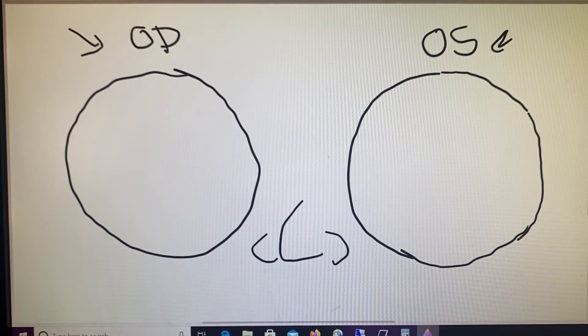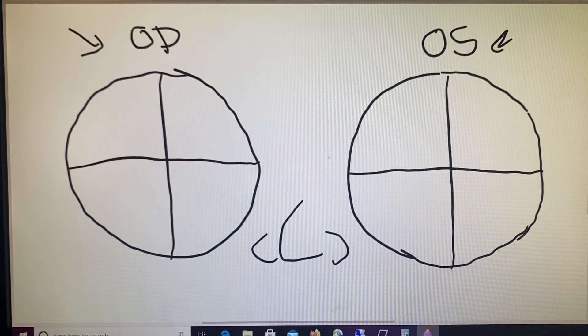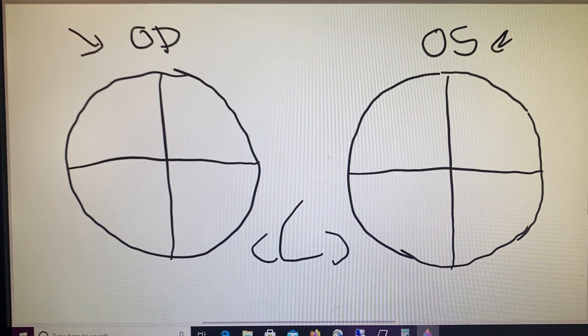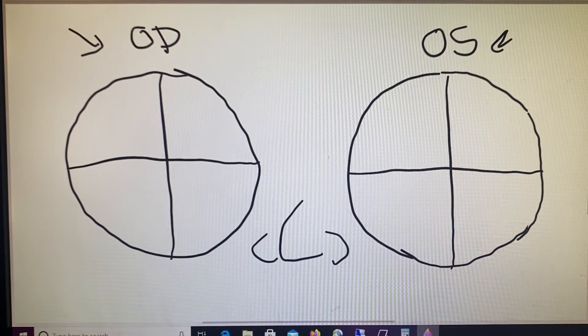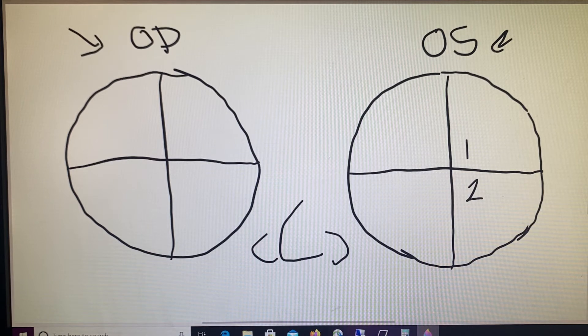Now, in addition to talking about base up or base down, sometimes they do divide the eyes into four quadrants. So we've got four quadrants for each lens. Again, as if we are looking at the patient, and they would define those as one, two, three, four for each eye.